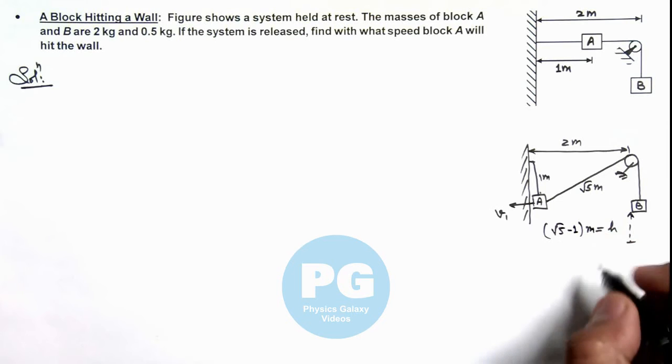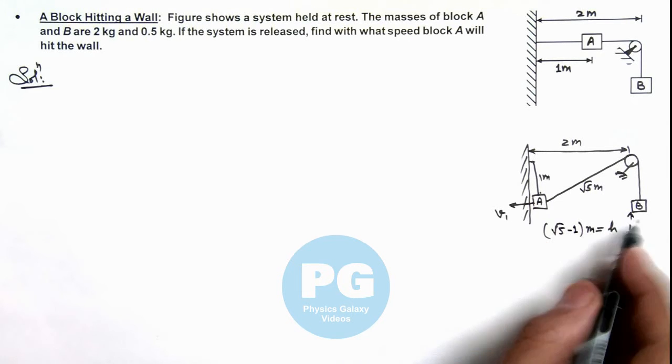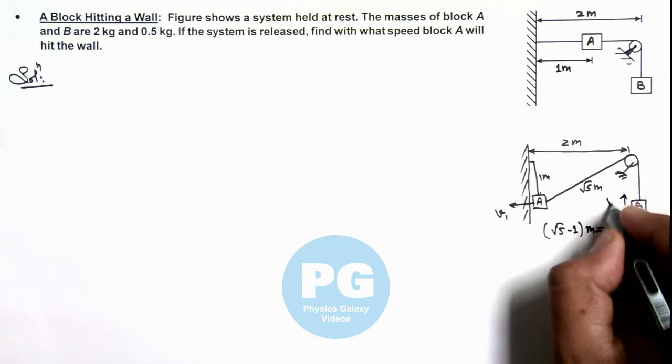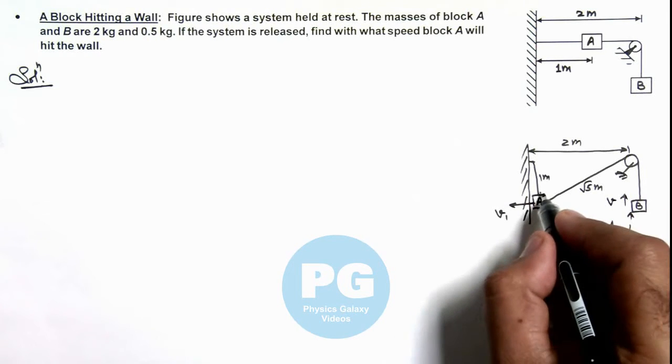Now in this situation, we can easily apply the work energy theorem in initial and final state if B is moving up with the speed v, and here if this angle is theta.